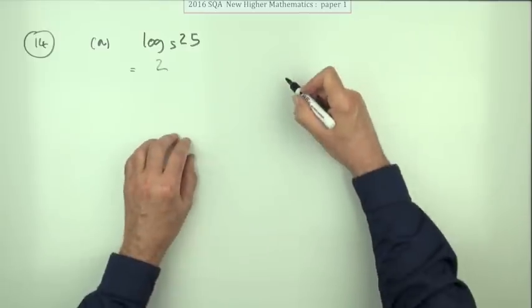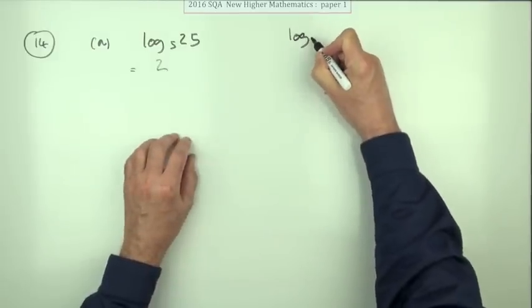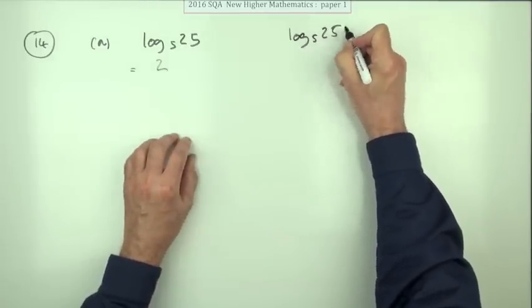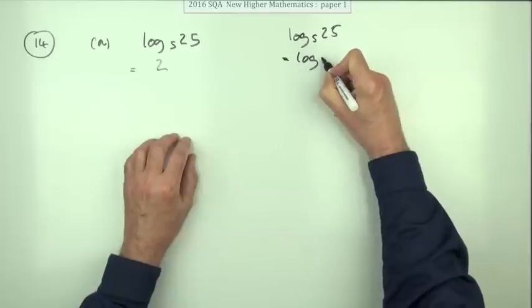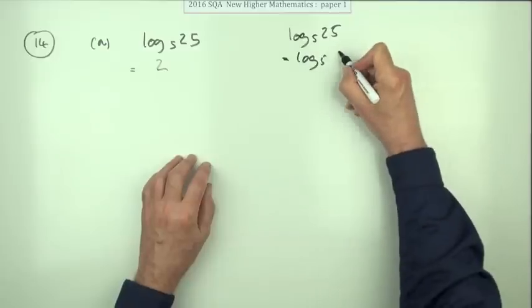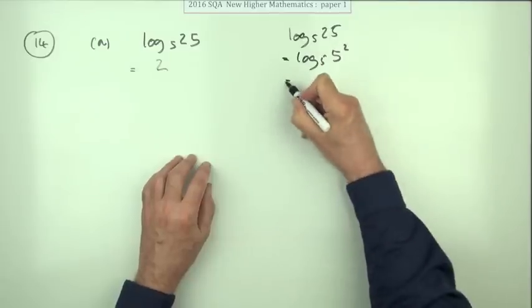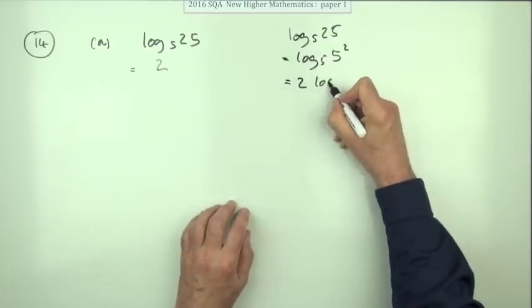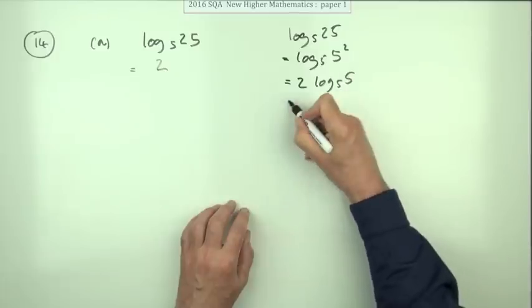However, you may wish to go through the palaver, as it's called, which is to say: how can I make 25 into a power of 5? I know, I'll make it into 5 to the power of 2.